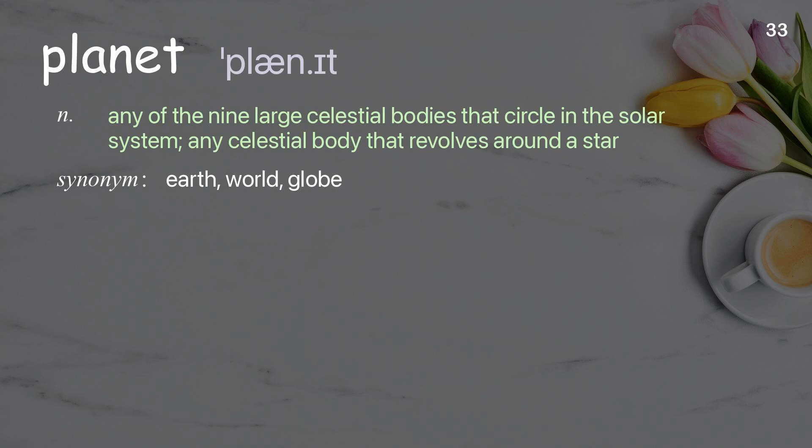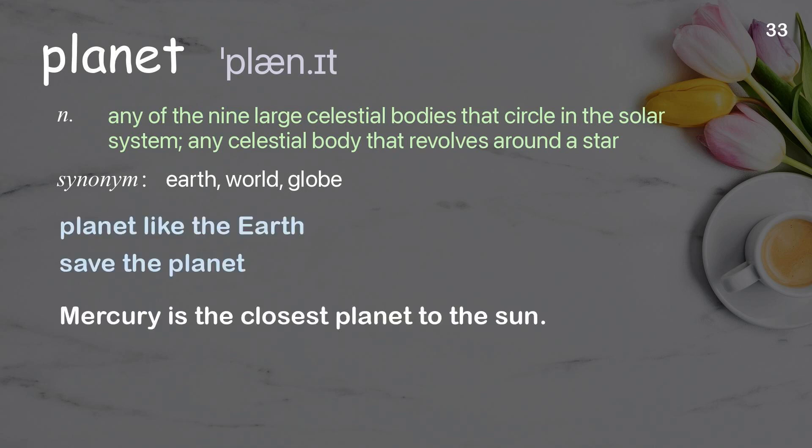Planet: any of the large celestial bodies that circle in the solar system; any celestial body that revolves around a star. Examples: planet like the earth; save the planet. Mercury is the closest planet to the sun.